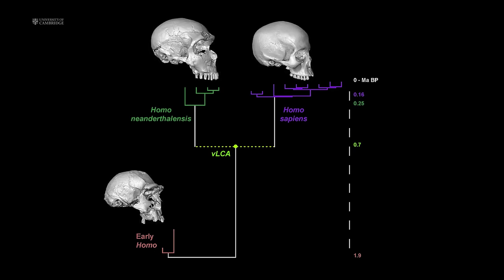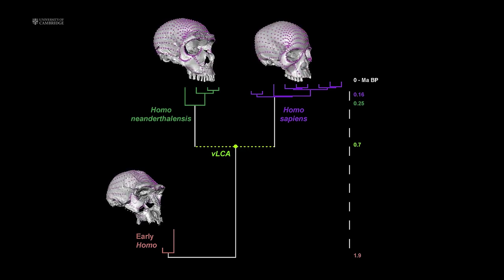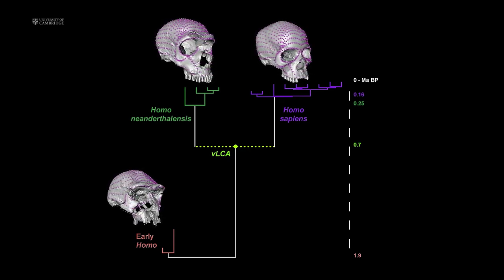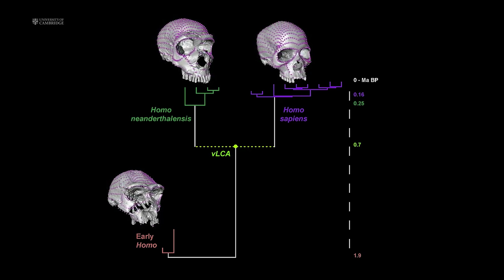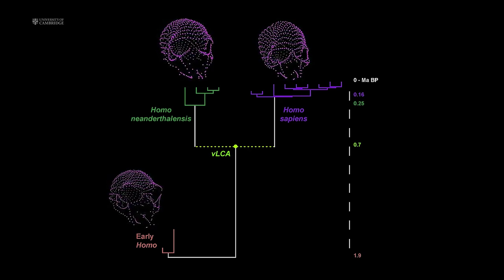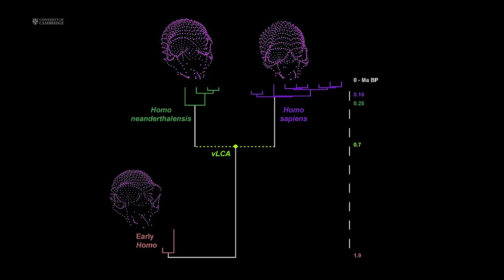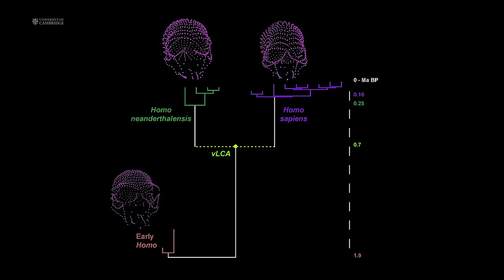The landmarks on these samples provided an evolutionary framework from which researchers could forecast a timetable for the ancient predecessor's skull form, or morphology. They then inserted a digitally scanned current skull into the timeline, distorting it to fit the landmarks as they moved through time.